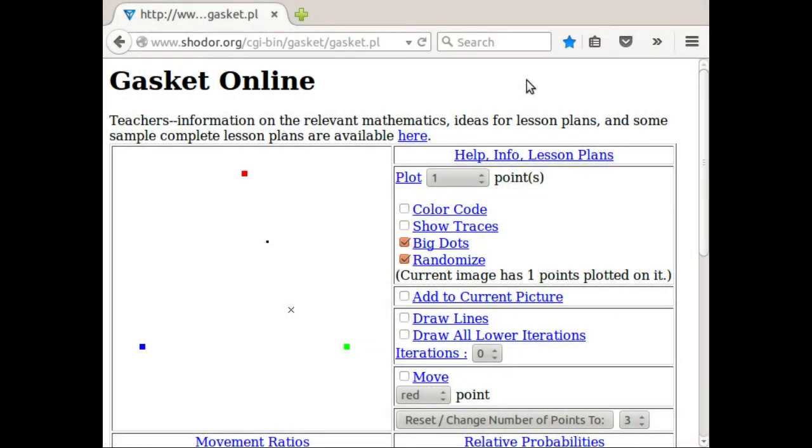So here's a nice program that will play the chaos game for us. It will do what I was just doing with a die and a ruler much more quickly and precisely. So the program is called Gasket Online. A link is in the resources section at the end of this unit. The URL is up there also. And I've set this to initially plot just one point. So when you click on the screen, the X is the starting point, and then you can see that there's just one point that it plots here.